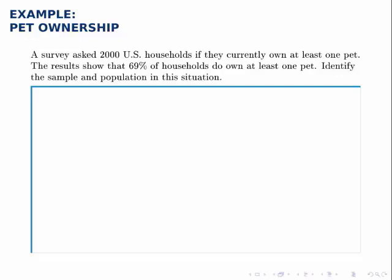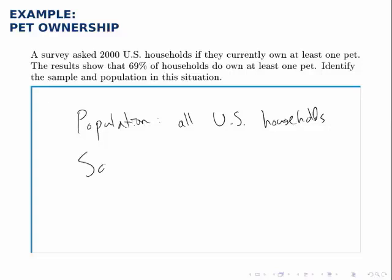Remember with a survey like this, the population is the group that we're interested in knowing something about, but it's usually not feasible to study the entire population, so we gather data from a small subset of that group. In this case, we're interested in knowing about all U.S. households, so that's the population. Notice that wasn't explicitly stated, but it's clear from the problem. Because it's infeasible to study all households in the U.S., we take this sample of 2,000 households, gather data from them, and use that to draw inferences about the entire population.